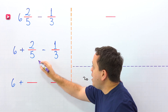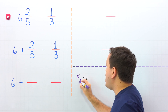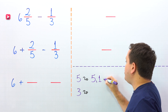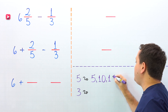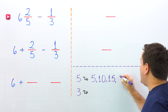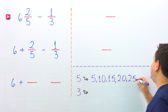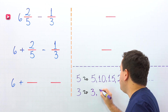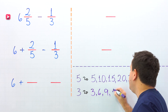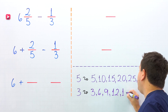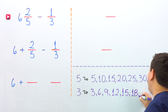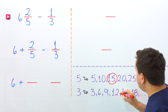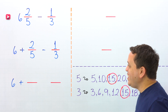The denominators that we have are 5 and 3. The first multiples of 5 are 5, 10, 15, 20, 25, 30, and so on. The first multiples of 3 are 3, 6, 9, 12, 15, 18, and so on. The smallest number that we can find on both lists is 15. Then 15 is the least common denominator.